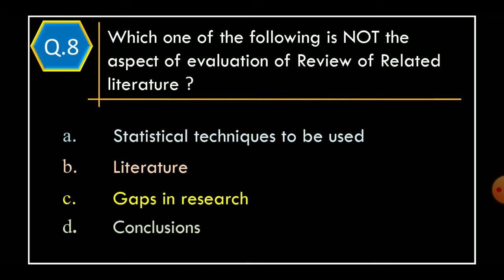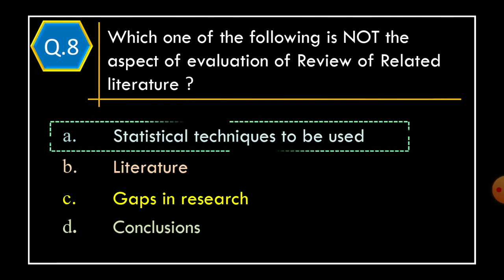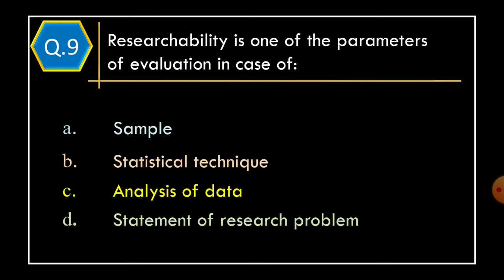Question 8: Which one of the following is not an aspect of evaluation of Review of Related Literature? Option A: Statistical Techniques to be Used. Option B: Literature. Option C: Gaps in Research. Option D: Conclusions. The correct option is Option A, Statistical Techniques to be Used.